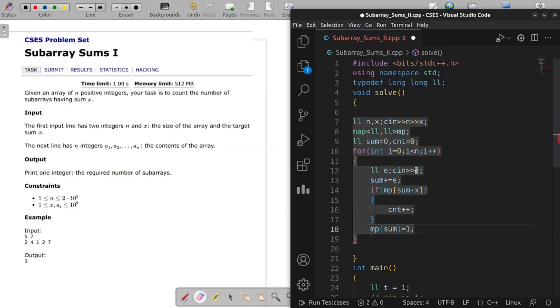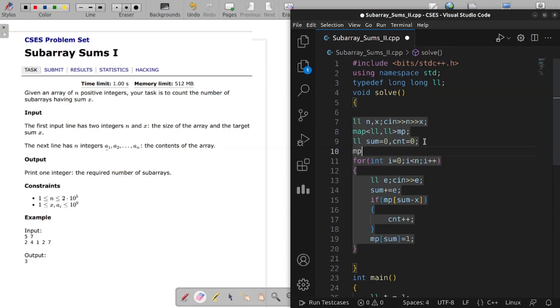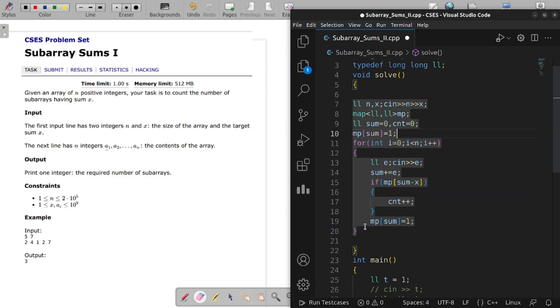Okay. Firstly, we will take map and update the sum in it. Print count.